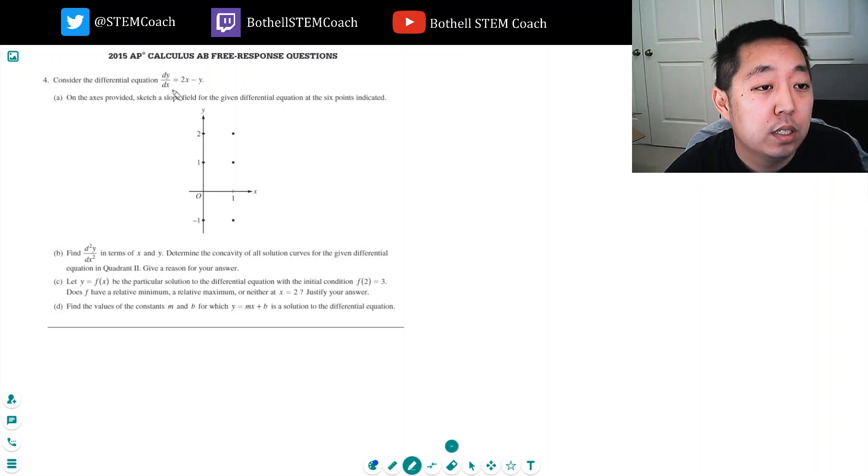Consider the differential equation dy/dx equals 2x minus y. This looks really familiar. Have I done this problem before? On the axis provided sketch a slope field for the given differential equation at the 6 points indicated.